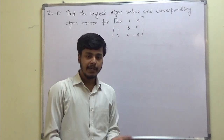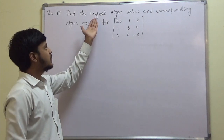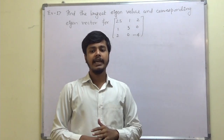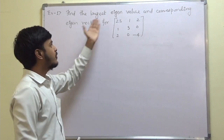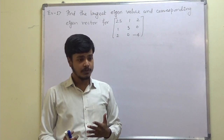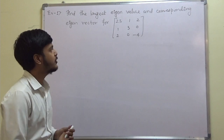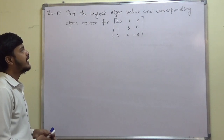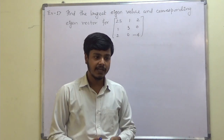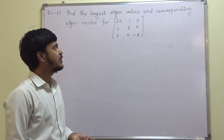Hello everyone, my name is Atish. The topic of this learning video is the largest eigenvalue and eigenvector. To get the largest eigenvalue and eigenvector for a given matrix, we adopt an iterative method, also known as the Rayleigh Power Method. We have already seen how to get the largest eigenvalue and eigenvector, so let us start.